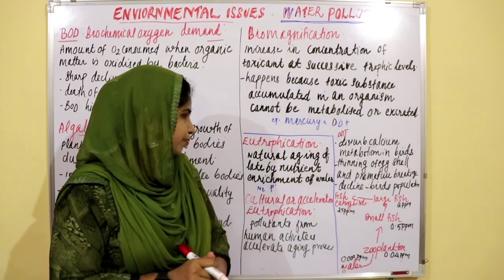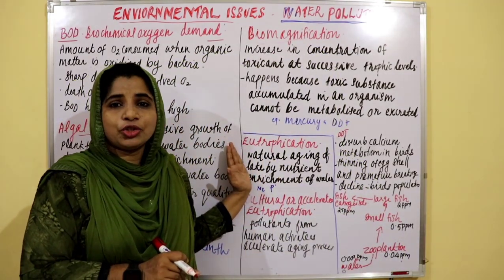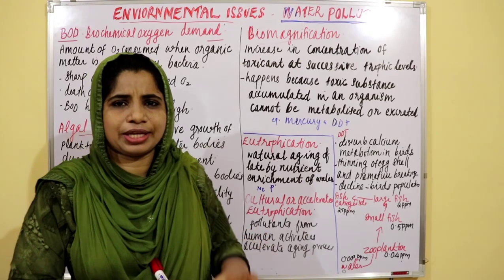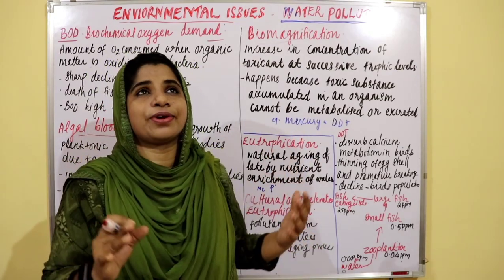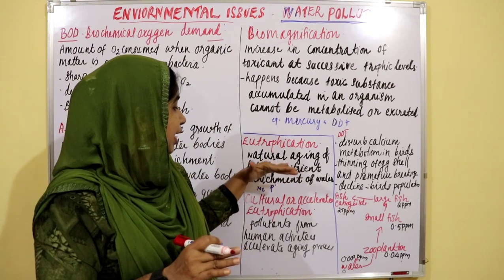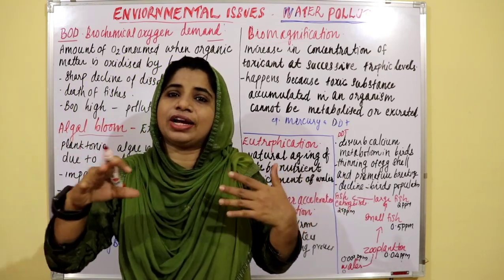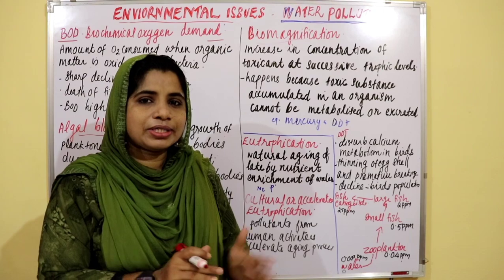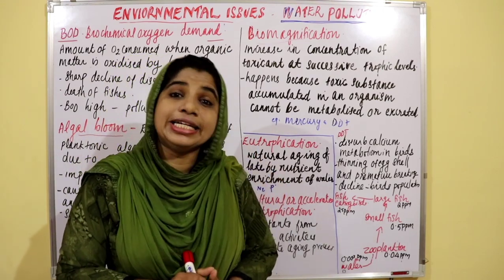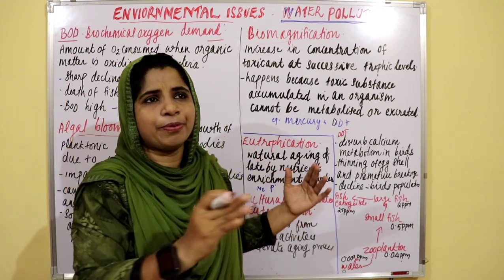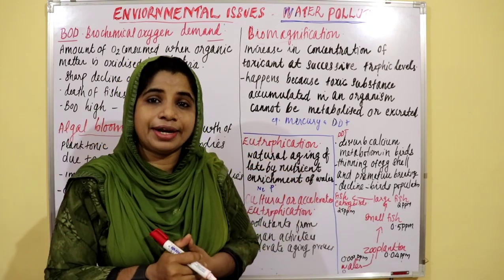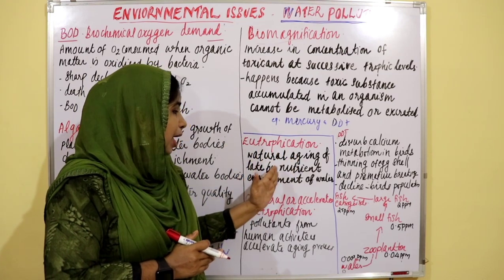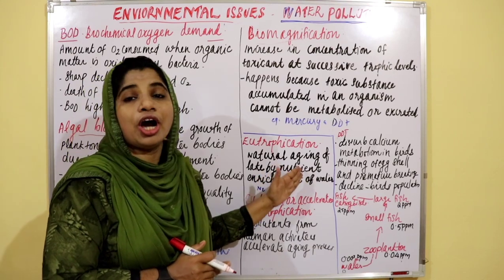Next is eutrophication. Eutrophication is the natural aging of a lake by nutrient enrichment of water. Over time, a lake is gradually converted through this process of eutrophication.